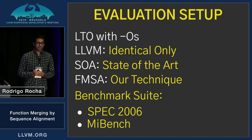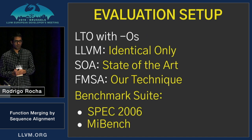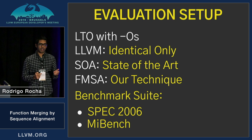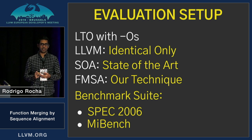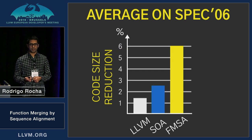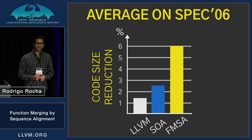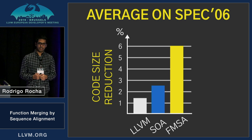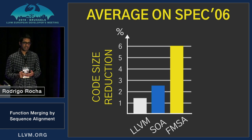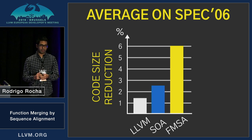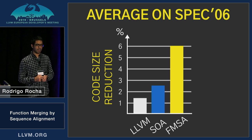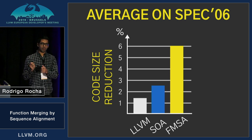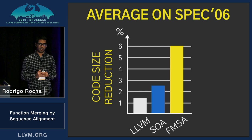So a quick evaluation here. We use LTO fashion and compare to LLVM's identical function merging and the state-of-the-art, using these two benchmark suites. This is our average reduction on SPEC 2006. We can see that the state-of-the-art improves quite well compared to LLVM's identical one, but we were able to improve a lot more compared to the state-of-the-art.